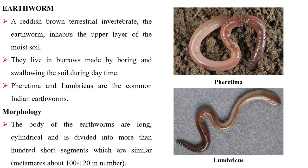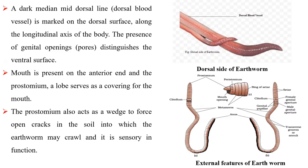The body of the earthworm is long, cylindrical and is divided into more than 100 short segments which are similar. A dark median mid-dorsal line is marked on the dorsal surface along the longitudinal axis of the body. The presence of genital openings distinguishes the ventral surface.